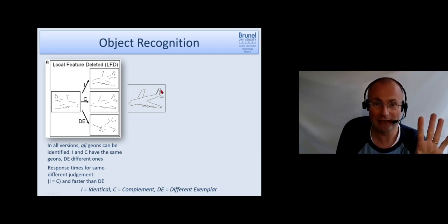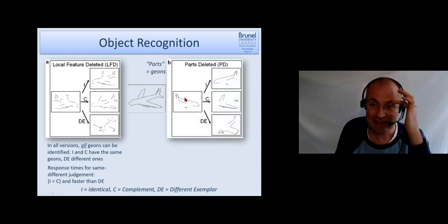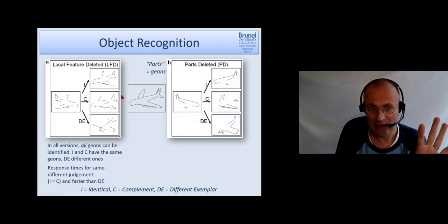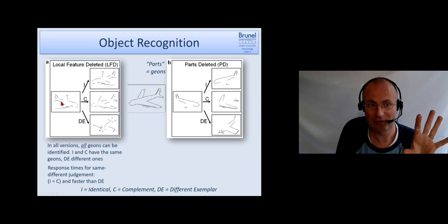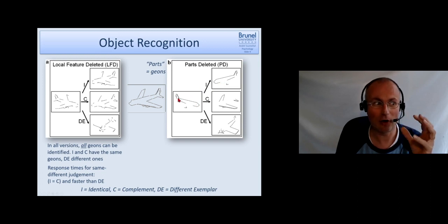Okay, so this is the first part of the story only. The second part of the story is, he did a similar thing, but he chose different lines to remove. It's the same amount of lines which are removed, but now they are removed in a way that complete geons are removed. So in this version, it's the identical, just mirror reversed, you have all the geons which are relevant to see the main body of the plane, but the geons of the wings are missing. So in the complementary version, you see that the body is missing but you see the wings.